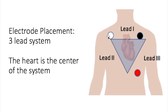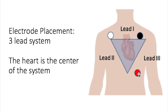The three lead system. We have our white lead which goes to the right upper chest, sitting just under the clavicle in the soft tissue space. The black lead sits in the left upper chest, again just under the clavicle in the soft tissue space. The red lead sits at the lower part of the ribs or just under the ribs. The saying to help us remember placement is: white to the right and smoke over fire.